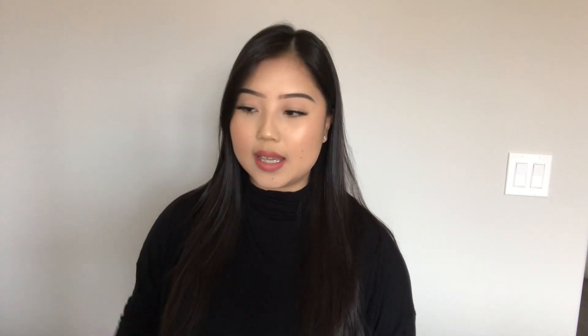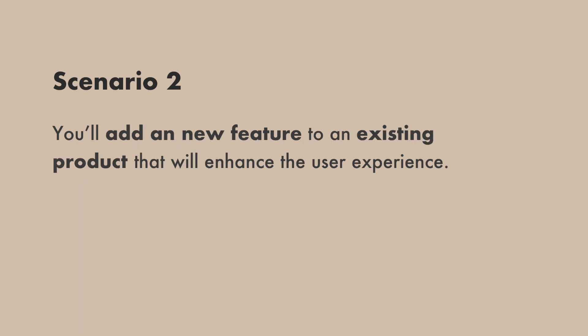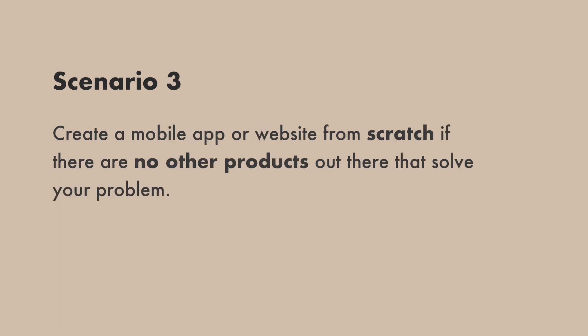That leads to my next point: defining what type of project you want to create. You want to do a bit of research before deciding this. With my research, I couldn't find anything online, so I decided to create an app from scratch. Knowing what type of project to create really depends on the problem you're trying to solve. There are three scenarios: create a redesign project if there's an existing product but you want to improve the UX; add a new feature to an existing product to enhance the experience; or create a mobile app or website from scratch if no other product solves your problem.